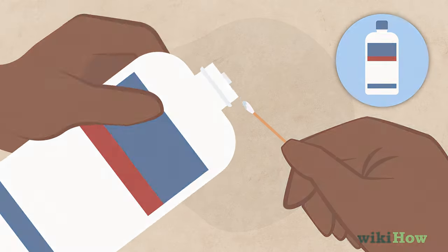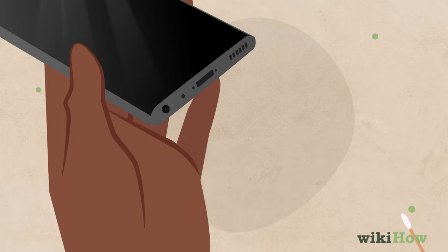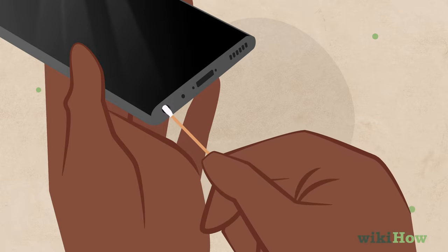If it's really caked on, dampen the swab in rubbing alcohol and try again. Remove any excess moisture by wiping the jack again with a clean, dry swab.